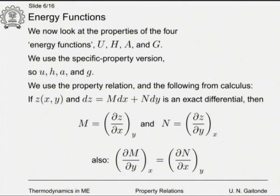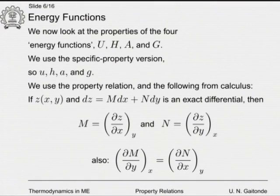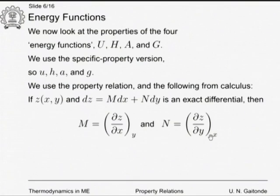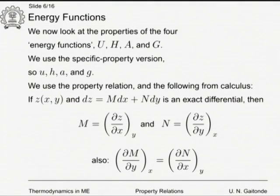The cross derivatives are independent of order. The second derivative of z — first with respect to x keeping y constant, then with respect to y keeping x constant — equals the second derivative in the reversed order. Because of this, ∂M/∂y at constant x equals ∂N/∂x at constant y, since both are cross partial derivatives of z. This relation is of utmost importance to us.